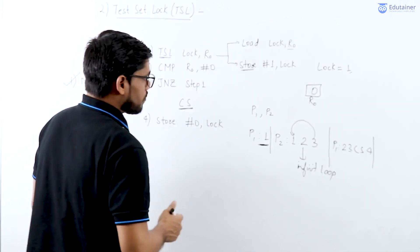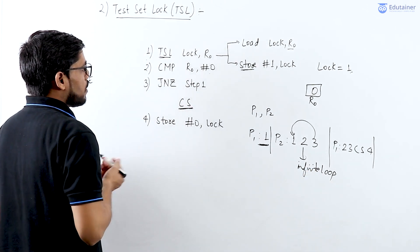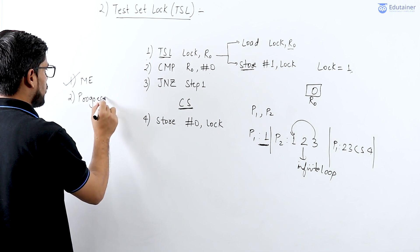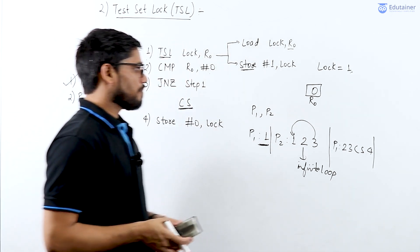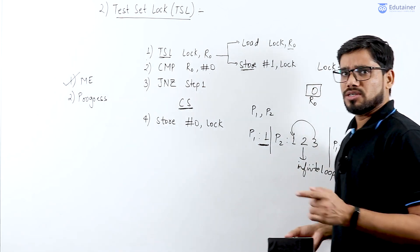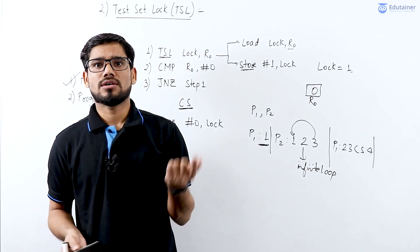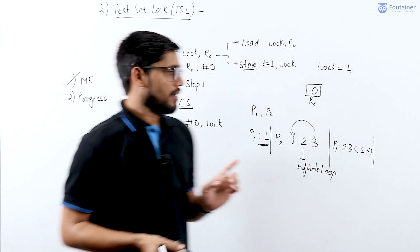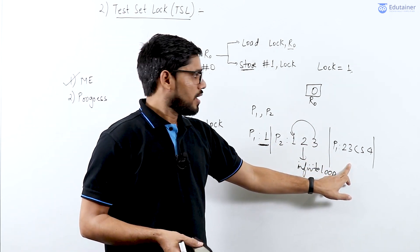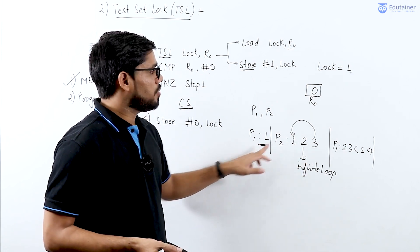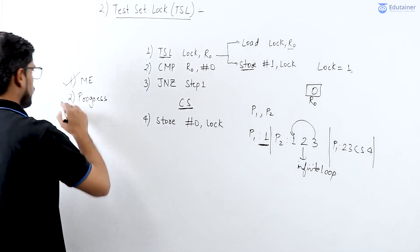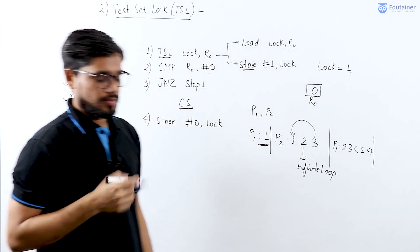The second primary requirement is progress. This solution provides progress as well. Progress says that whenever a process is not interested in entering the critical section, it will not affect other processes from entering. If P1 is not interested, P2 is free to enter the critical section. No other process will block P2, so progress is also guaranteed by the TSL solution.